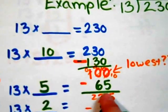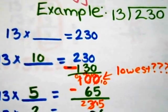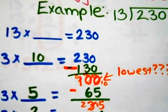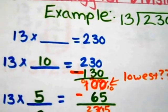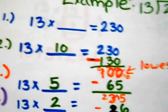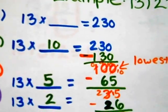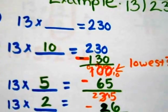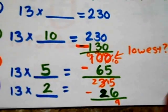13 times 5 gives me 65. 65 from 100 gives me 35. Is that the lowest? Nope. 13 times 2. 13 times 2 is 26. 26 from 35 gives me 9.